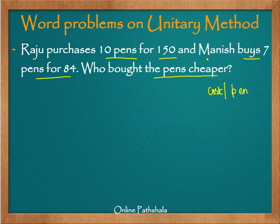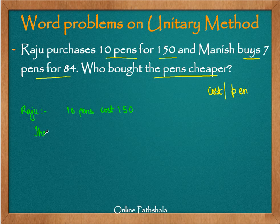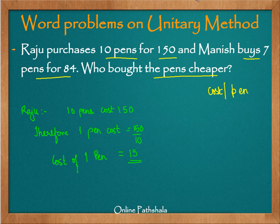So we apply the unitary method to find the cost of one pen for both Raju and Manish and then compare. Let us start with Raju. For Raju, 10 pens cost 150 rupees. Therefore, one pen costs him 150 divided by 10, which is 15 rupees.